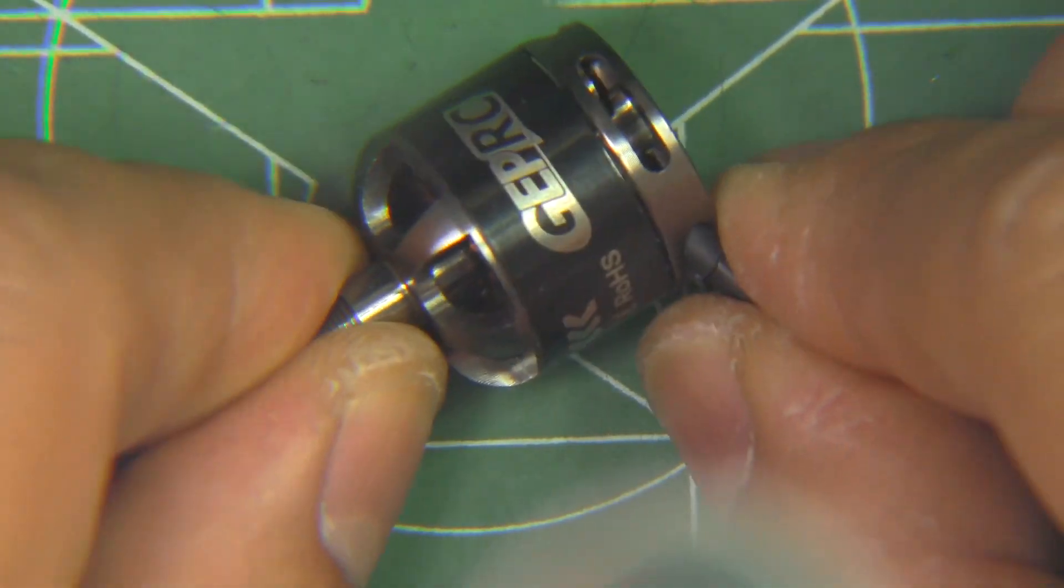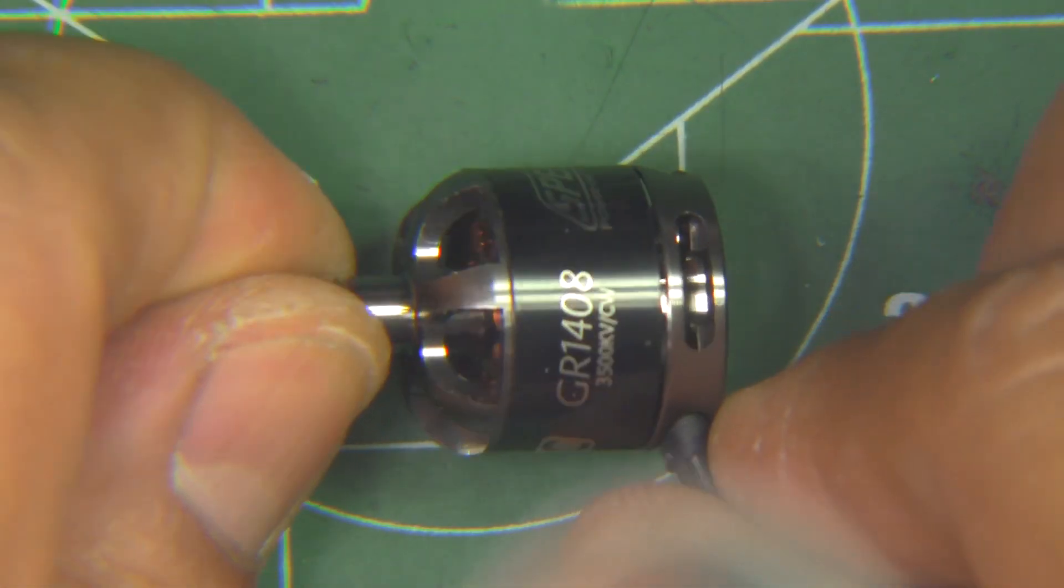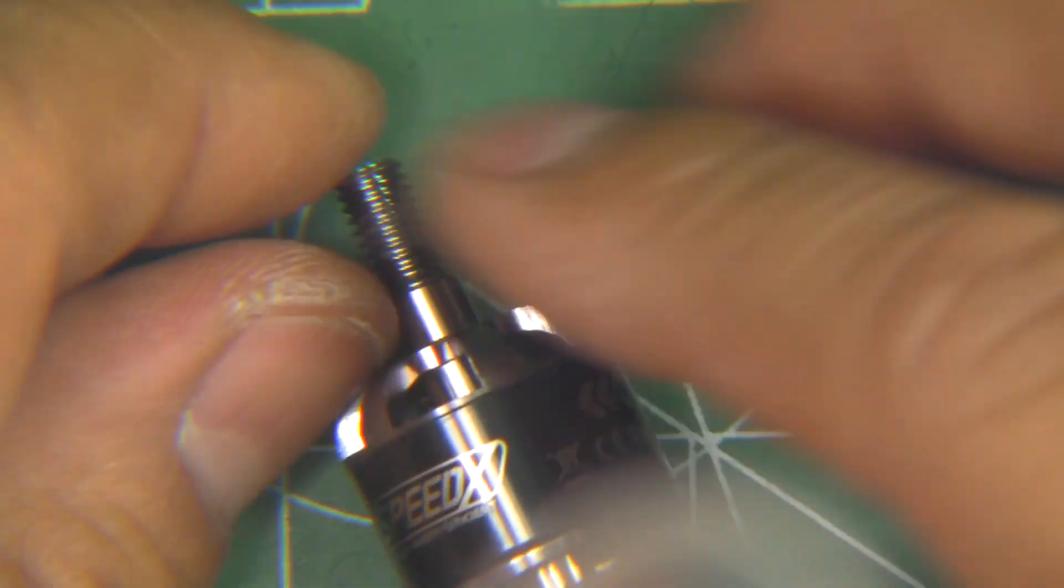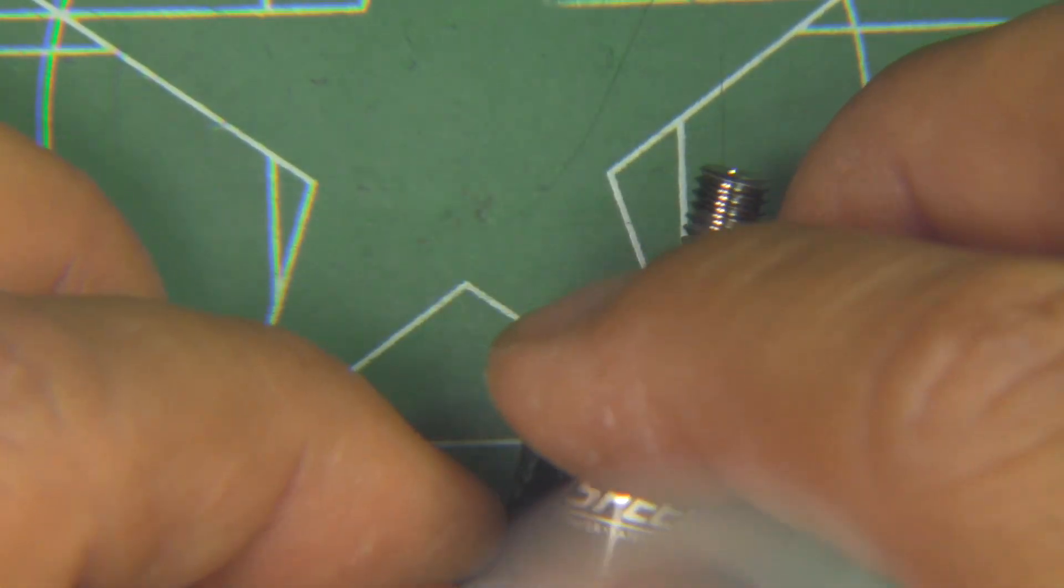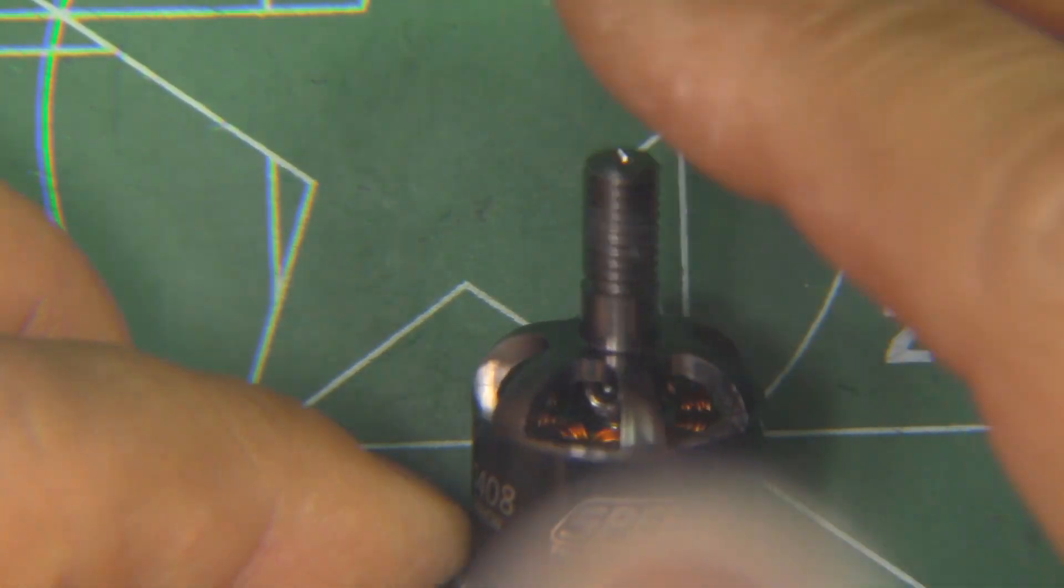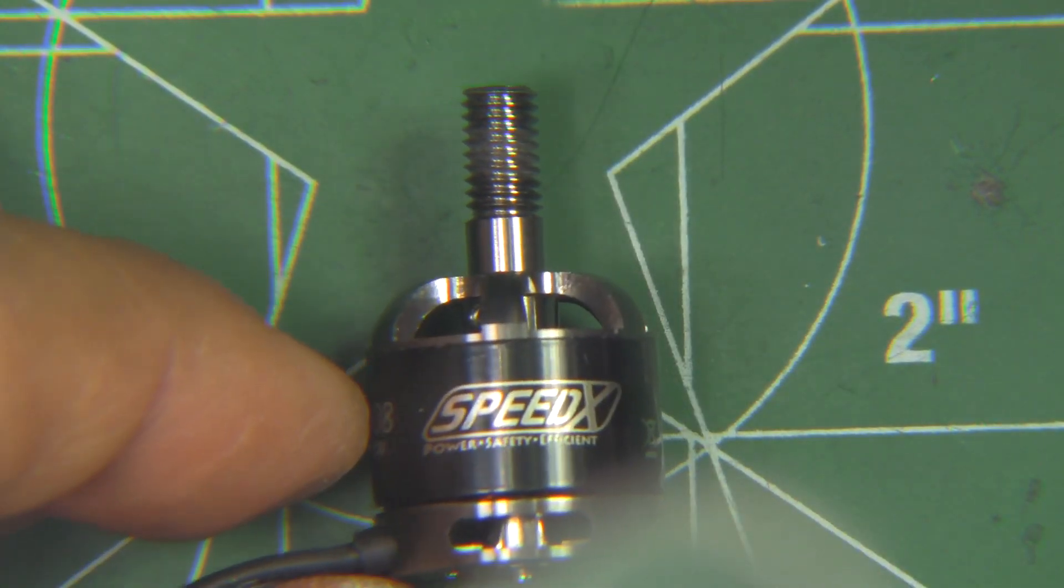So let's put it together and let's put it on the thrust stand and let's see how it does and we'll compare it against the other 1407s and let's see if this motor is a good option for replacement for 1407s. So let's go to the thrust stand.